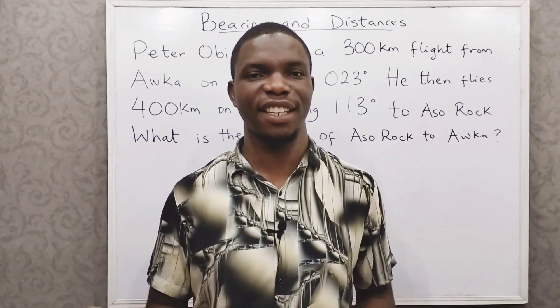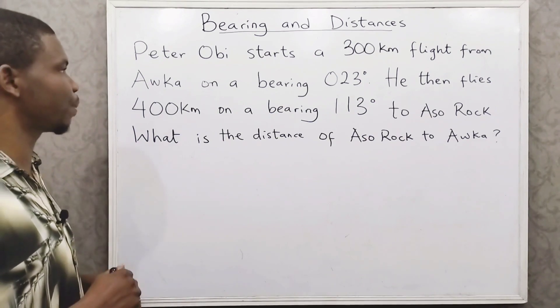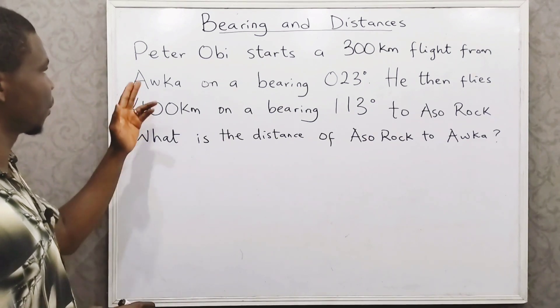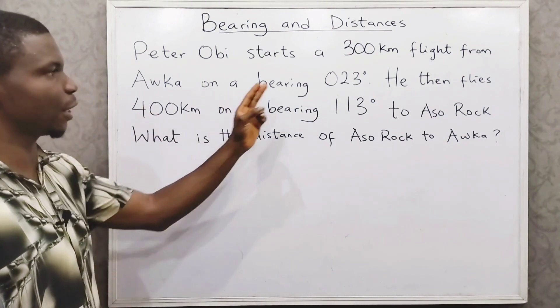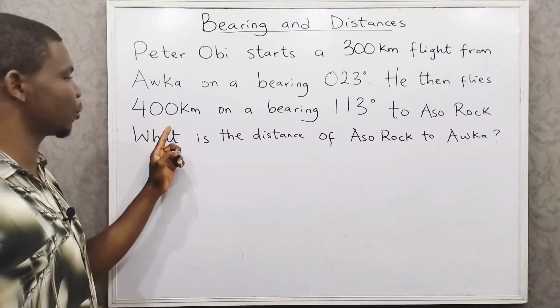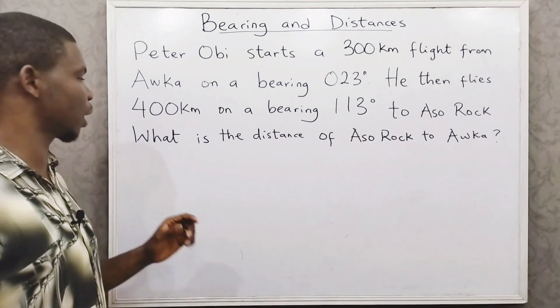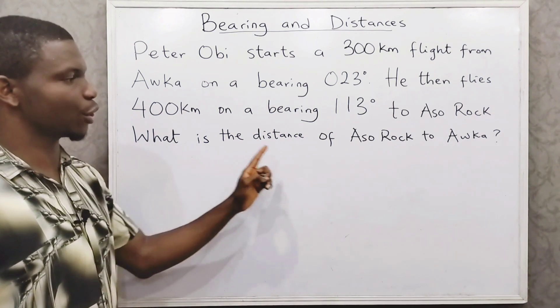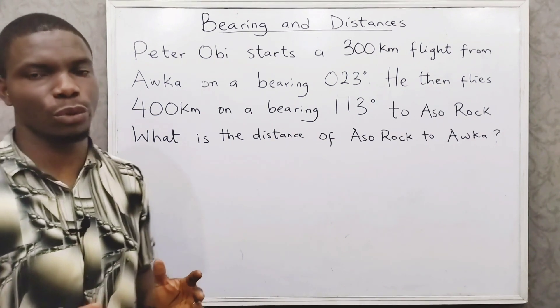Hello and welcome to class. Today we'll be looking at bearings and distances, and we have an interesting question on the board to help us explain this topic. A pilot starts a 300-kilometer flight from Oka on a bearing of 23 degrees, then flies 400 kilometers on a bearing of 113 degrees to Asurok. What is the distance of Asurok to Oka?